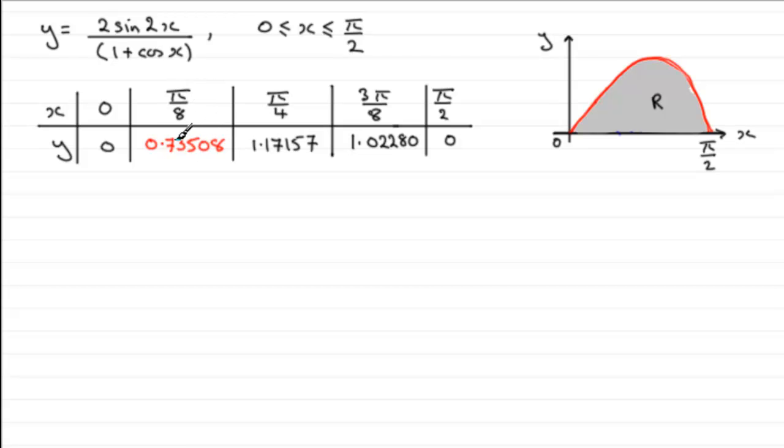Giving our answer to 5 decimal places. Well, you can see I've done it. It comes out at 0.73508. Just check that out by putting pi upon 8 into your equation here. But make sure your calculator is in radians mode.